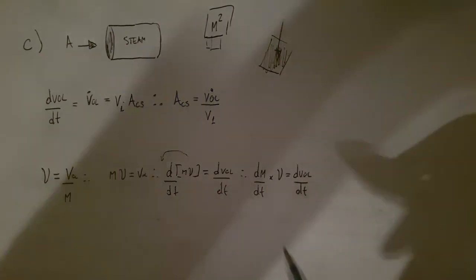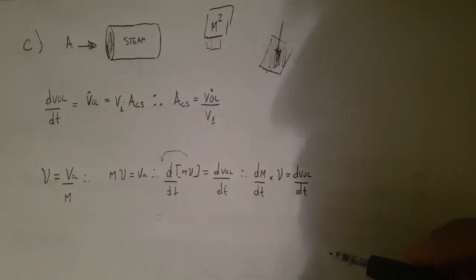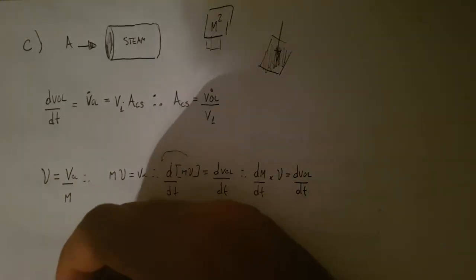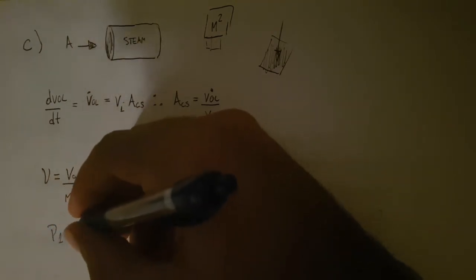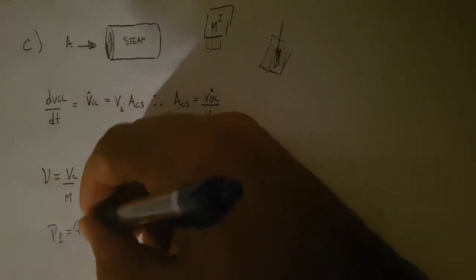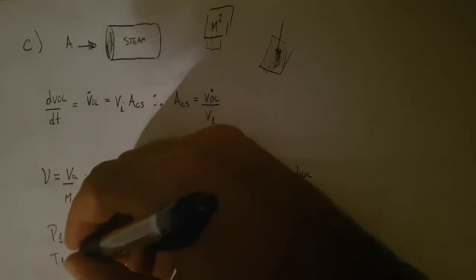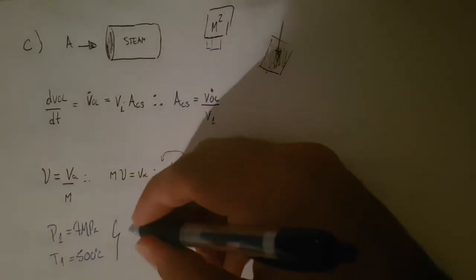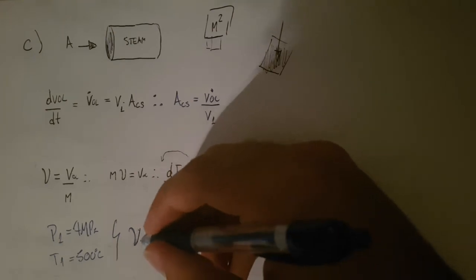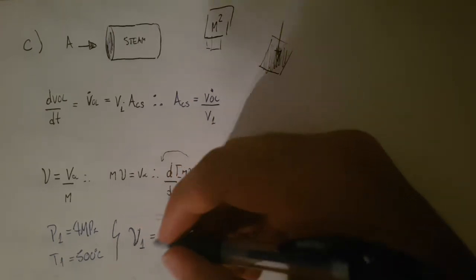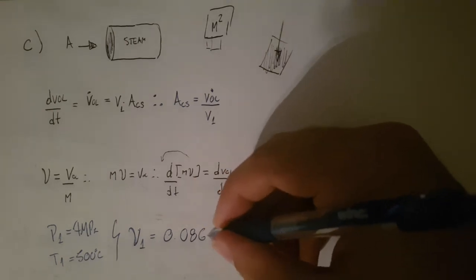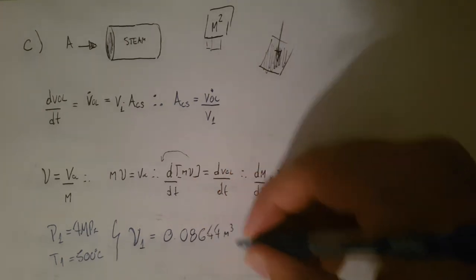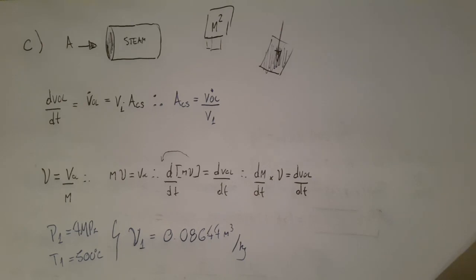Specific volume of the inlet. Well, that's easy. We just have to look, again, at the table. And we need to grab the value for the superheated table, where the pressure is 4 megapascals. And the temperature is 500°C. The superheated table. I'll go over there and grab my specific volume 1, which is 0.08644 meters cubed per kilogram.